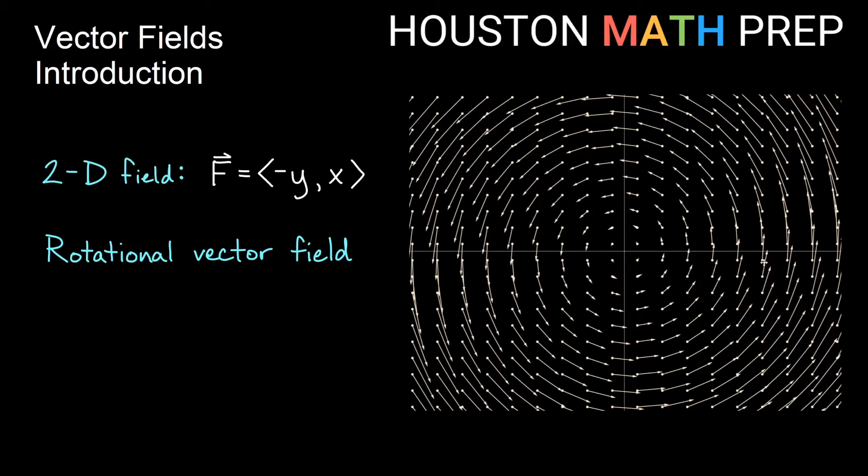Here's another rotational field. You can tell this one's now going counterclockwise, a similar thing. This one is <-y, x> as the formula for our vector field. This is also a rotational field.